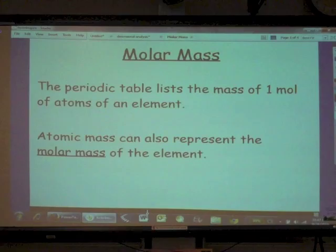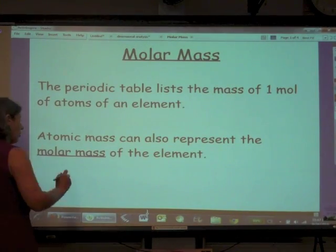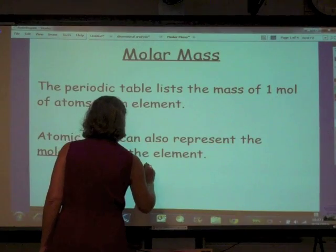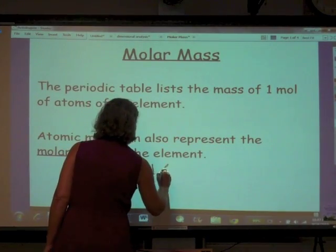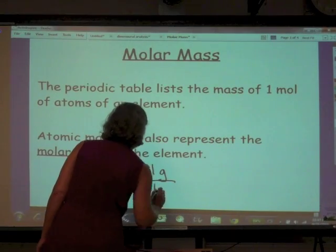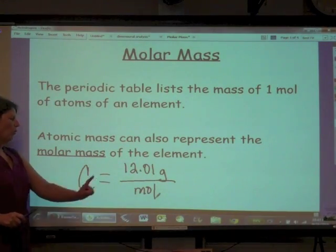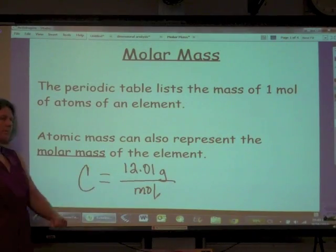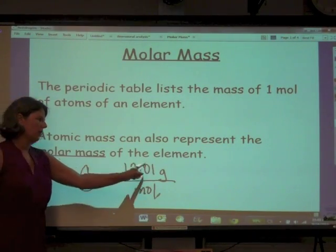In chemistry, we count by weighing. So if we go to the periodic table, we see that carbon has a molar mass of 12.01 grams per mole. One mole of carbon atoms has a mass of 12.01 grams.